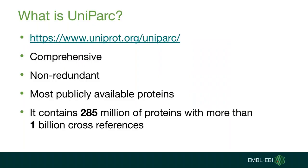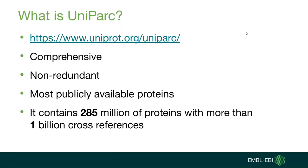So what is UniParc? UniParc is a comprehensive and non-redundant database that contains most of the publicly available protein sequences in the world. Protein may exist in different source databases and in multiple copies in the same database. UniParc avoids such redundancy by storing each unique sequence only once and gives it a stable and unique identifier, which we call UPI, which means UniParc Protein ID.